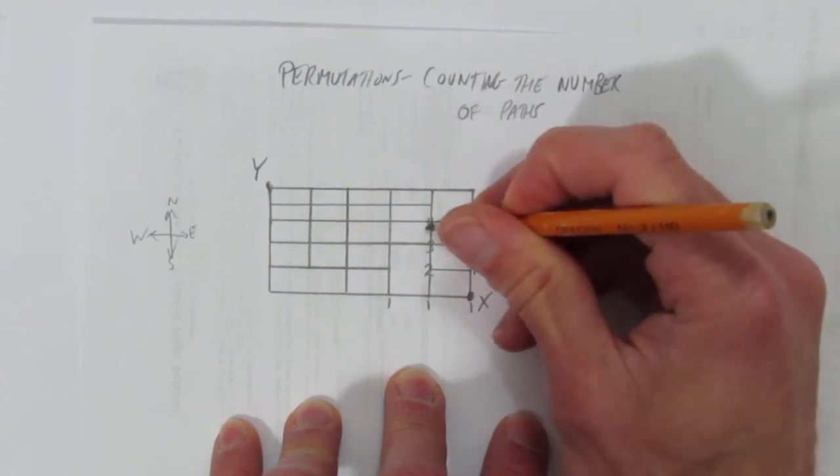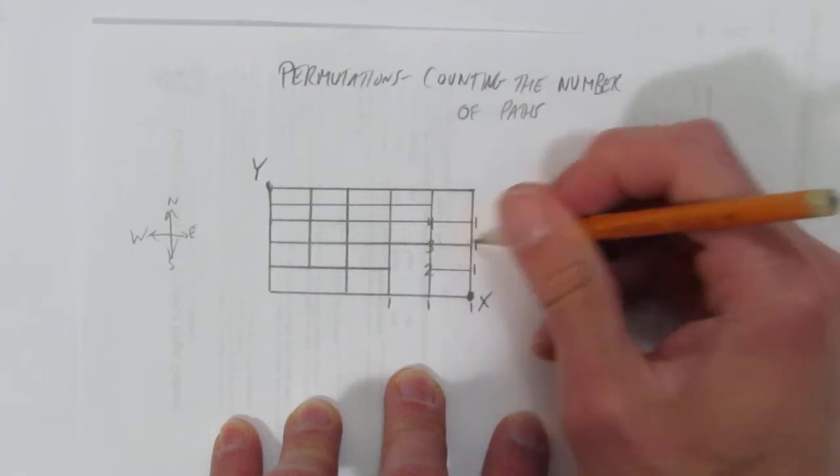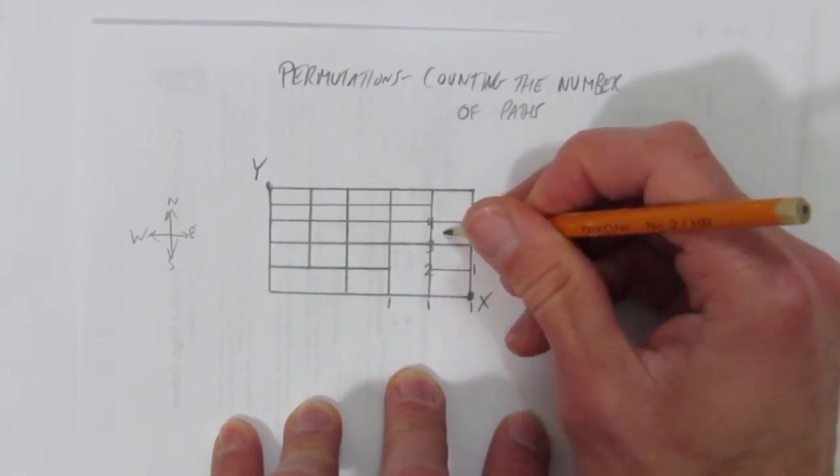Because you can either go this one path, or this path, or this path, or this path. And so, don't bother counting all the paths. Just add the numbers.